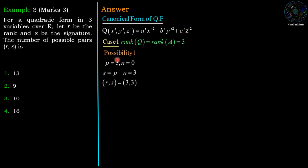For R = 3, the first possibility is p = 3 and n = 0, meaning all three terms are positive with no negative terms. So signature S = p − n = 3 − 0 = 3. This gives the first pair (3, 3).